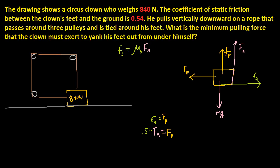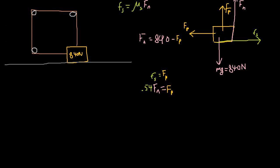mg is 840 newtons. Now, how do we define the normal force? The normal force is the force that the ground exerts, so in this context the normal force equals 840 minus the force of pulling. Let's substitute that in: 0.54 times (840 minus force of pulling) equals the force of pulling.